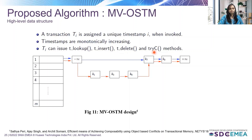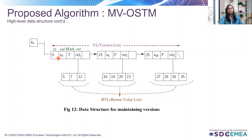Let's discuss the data structure for maintaining versions. We are maintaining a list of lists. Consider the version list corresponding to key K1. For simplicity, we have shown three versions with timestamps 0, 15, and 25. Each version maintains five fields: timestamp, value, mark field, return value list, and the next pointer. These are the versions 0, 15, and 25, along with their respective return value lists.